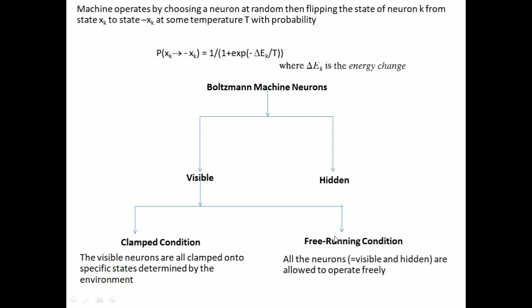In the free-running condition, the visible neurons are allowed to operate freely. But in the hidden group of neurons, we do not have any clamped condition.